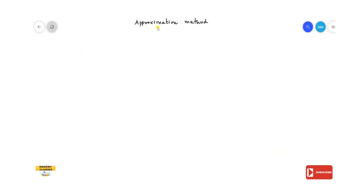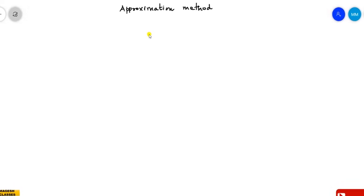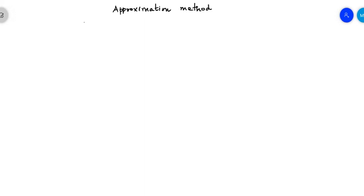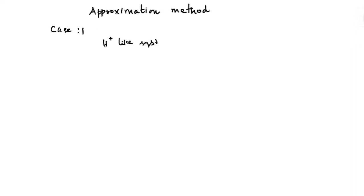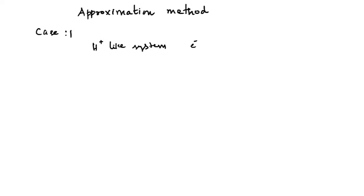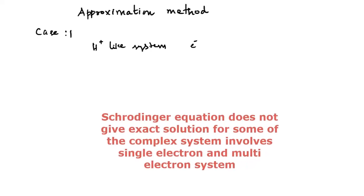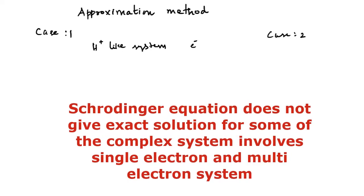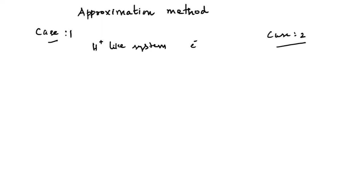So what is the approximation method in quantum chemistry? The Schrödinger wave equation gives exact solutions only for simple single-electron systems: the hydrogen atom, hydrogen-like systems, an electron in a 1D box, the rigid rotator, and the simple harmonic oscillator. These are systems for which the Schrödinger equation gives exact solutions. However, for multi-electron systems, exact solutions become very difficult.